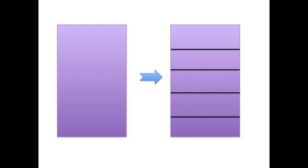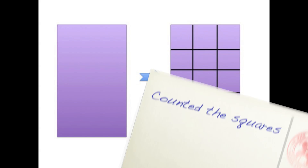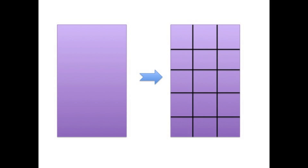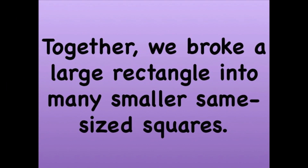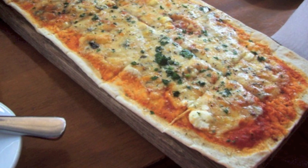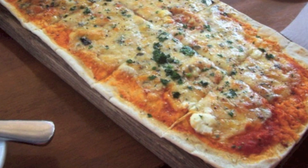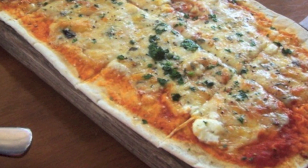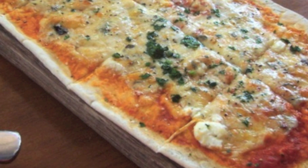Pretty cool! So let's sum up what we did today. We took a rectangle and divided it into rows and columns. Then we counted how many total squares we had. Great job! Together, we broke a large rectangle into many smaller, same-sized squares. Now that you know how to break a large rectangle into many smaller, square-shaped pieces, you can also break a rectangular pizza into smaller, same-sized pieces.